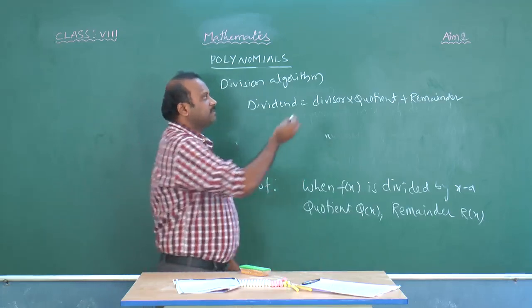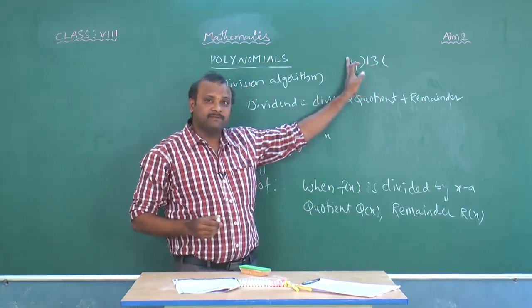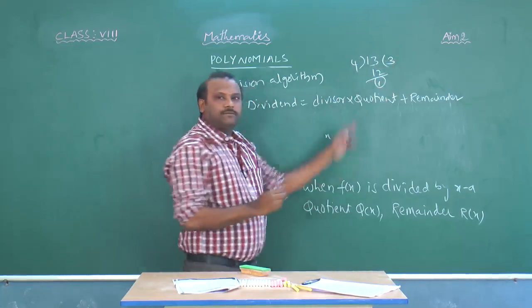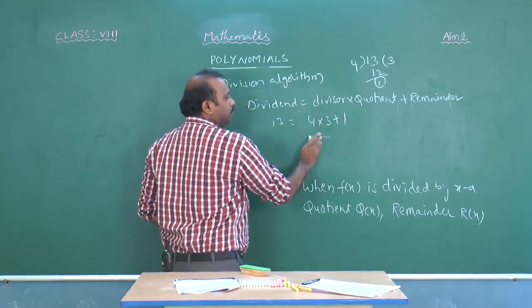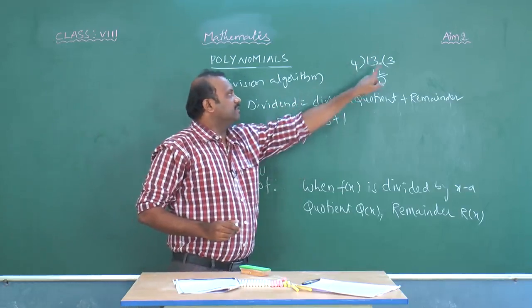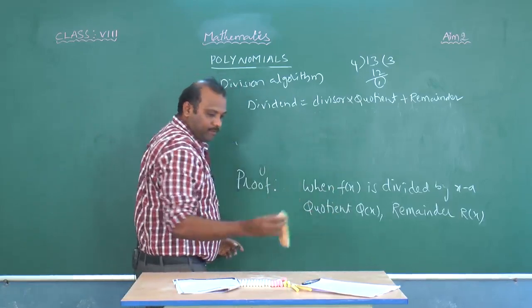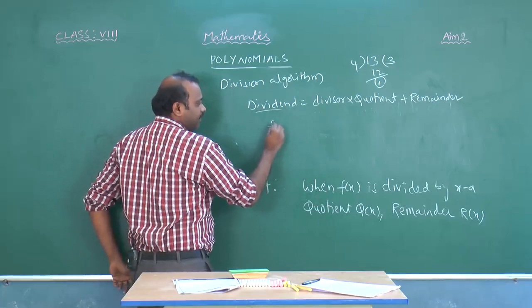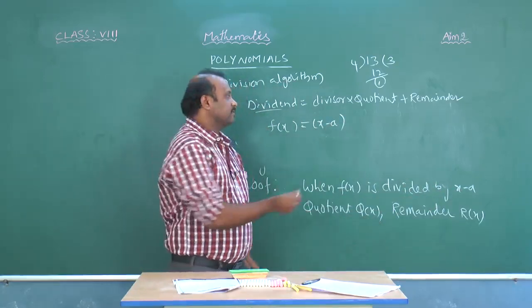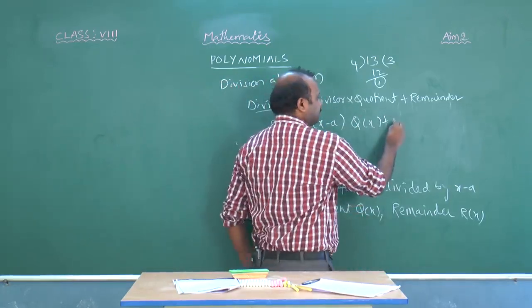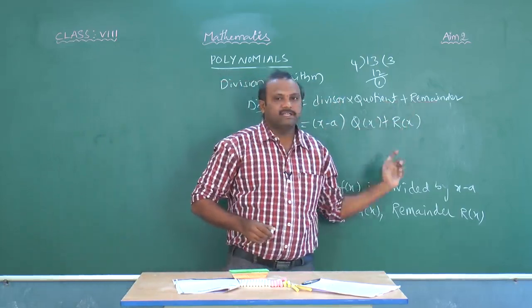Let us see some examples from earlier classes. Thirteen divided by four: four threes are twelve, so the remainder is one. We write: thirteen equals four into three plus one. So thirteen is the dividend, four is the divisor, three is the quotient, one is the remainder. In the same way, for our polynomial problem: f of x is the dividend, x minus a is the divisor, q of x is the quotient, and r of x is the remainder.